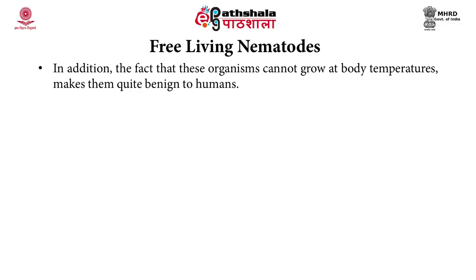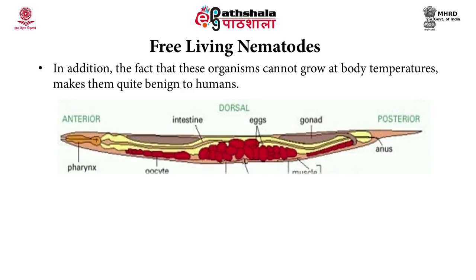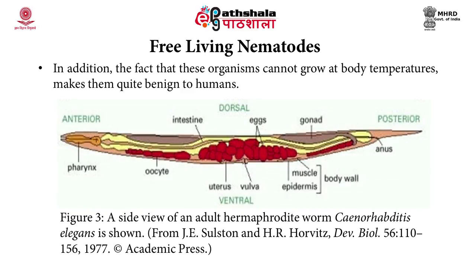In addition, the fact that these organisms cannot grow at body temperatures makes them quite benign to humans. A side view of an adult hermaphrodite worm C. elegans is shown in this diagram. C. elegans has a simple anatomy with a small number of tissues and internal organs such as mouth, pharynx, intestine, gonads and collagenous cuticle.